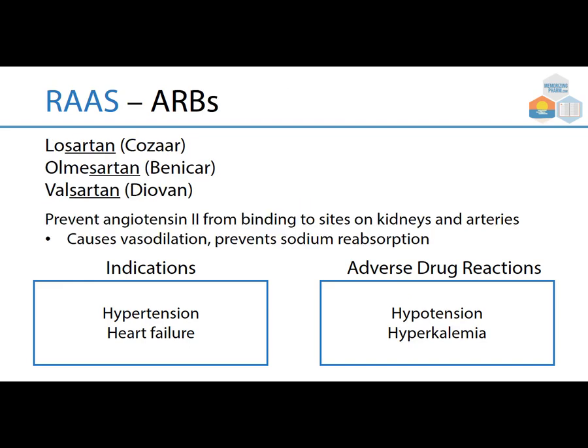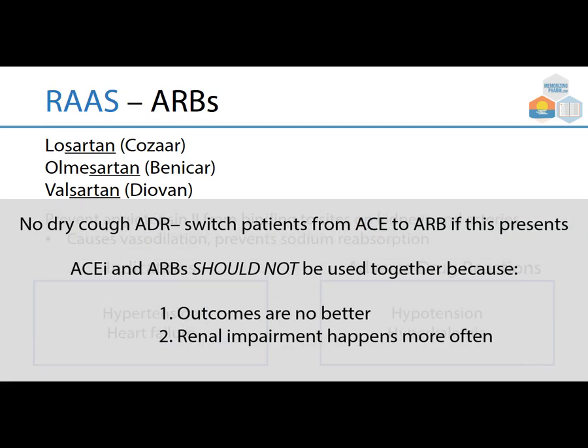ARBs — angiotensin-2 receptor blockers — include losartan (Cozaar), olmesartan (Benicar), and valsartan (Diovan), all ending in '-sartan.' They prevent angiotensin-2 from binding to receptors on kidneys and arteries, causing vasodilation and preventing sodium reabsorption. Indications are hypertension and heart failure. Adverse drug reactions include hypotension and hyperkalemia, just like ACEIs — but no dry cough. ACEIs and ARBs should not be used together, as outcomes are no better and renal impairment can result.